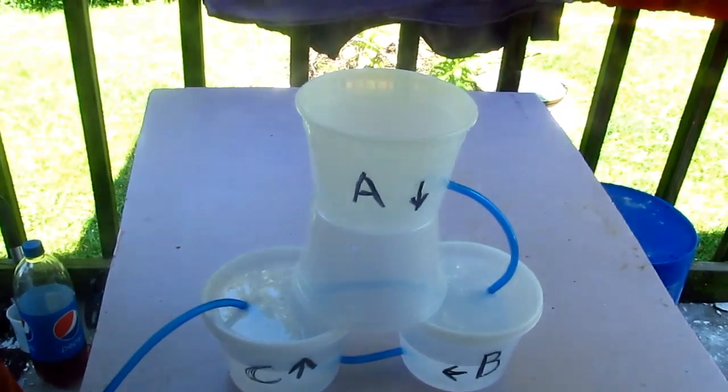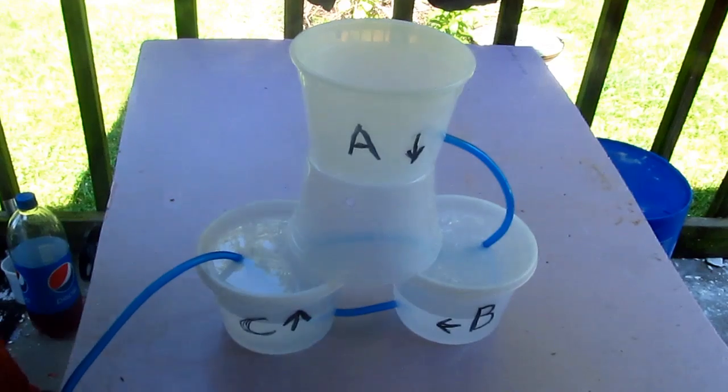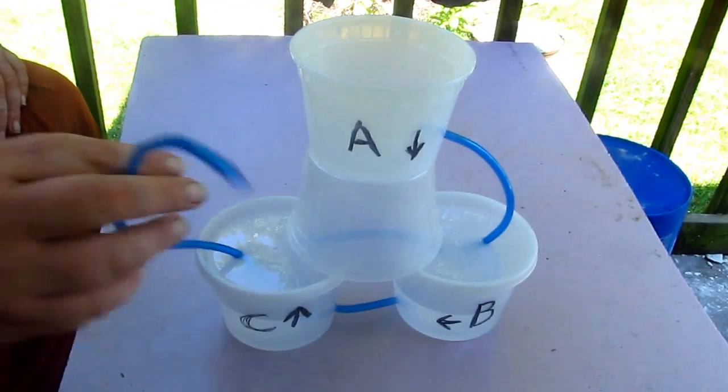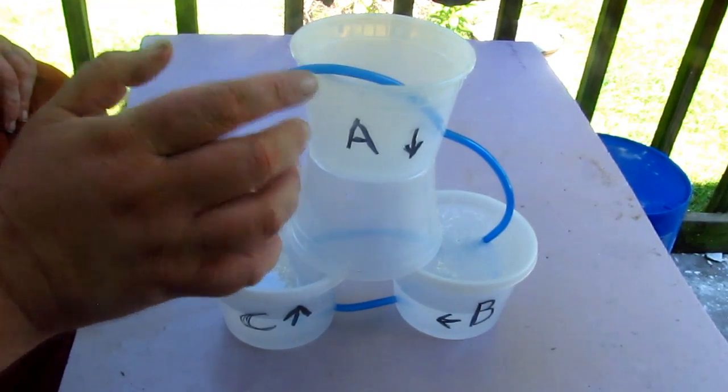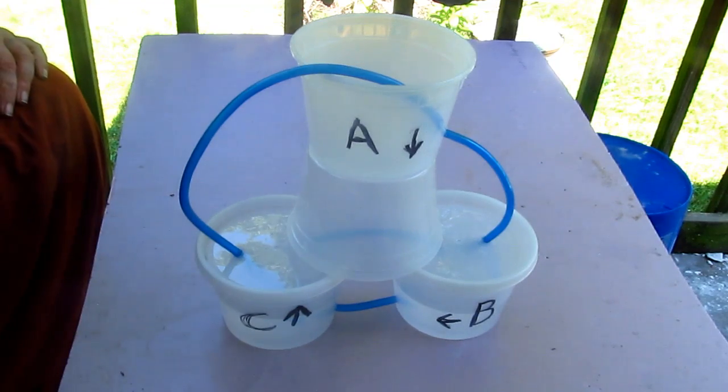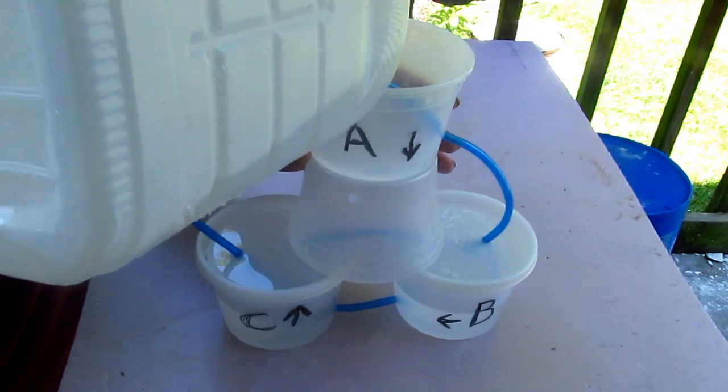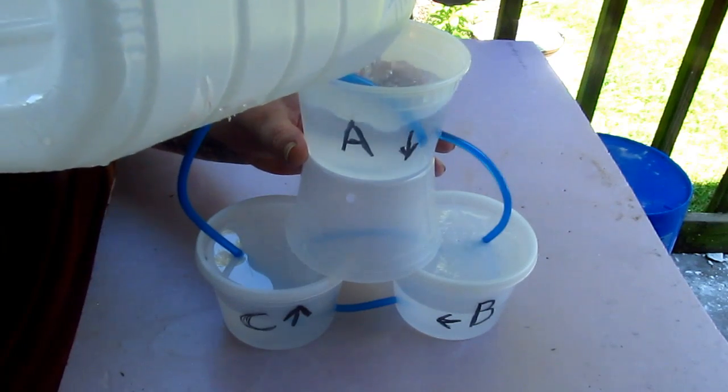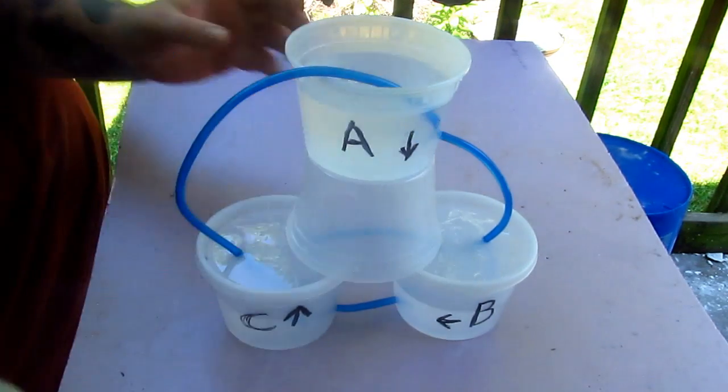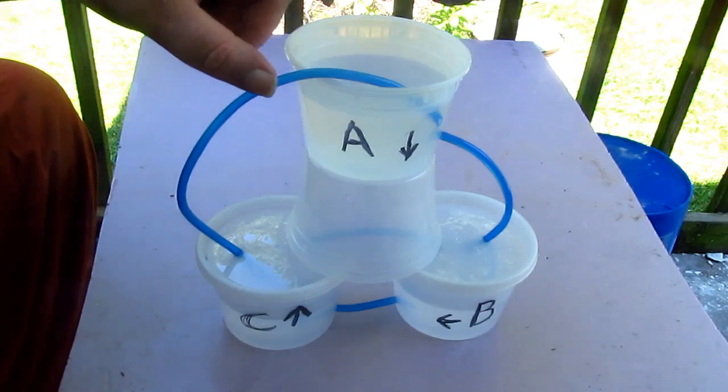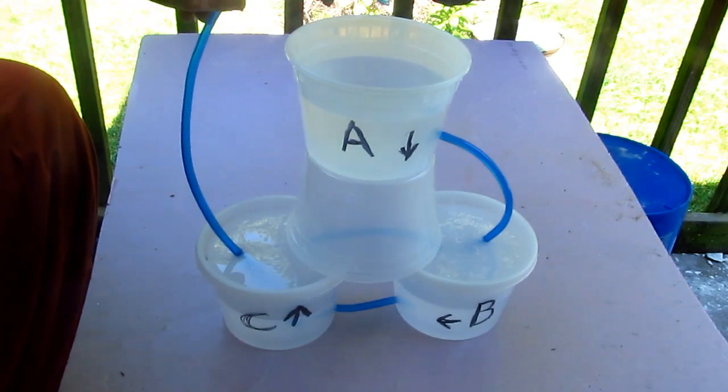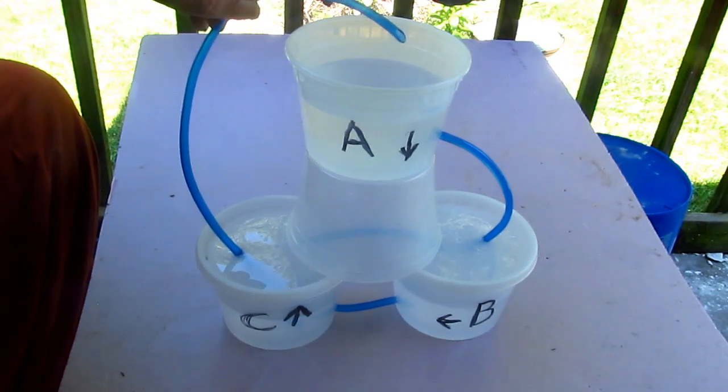So now we have A, B, and C. That's the directions that the water should be traveling and this should be our return. So we're going to stick that there. We're going to prime this pump by filling up A almost the whole way to the top. And does it work? I believe not.